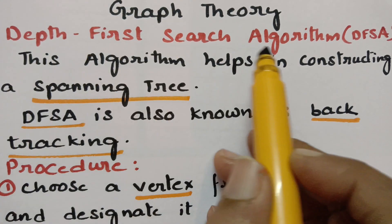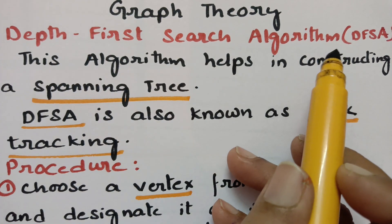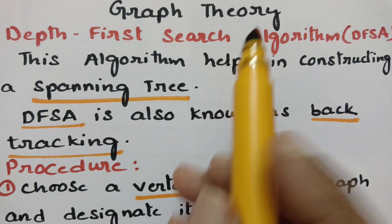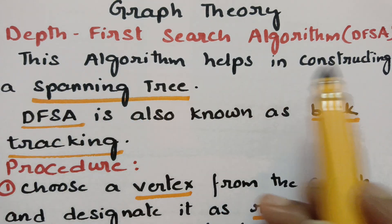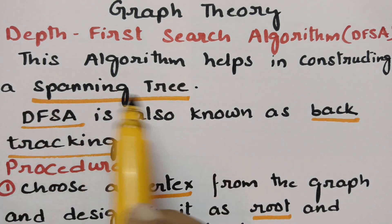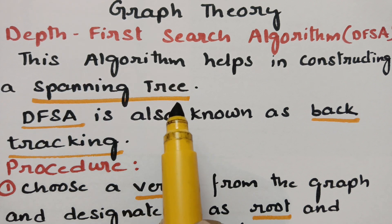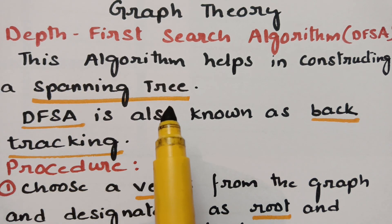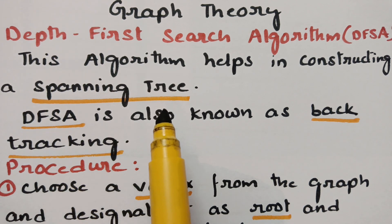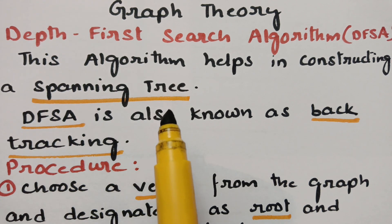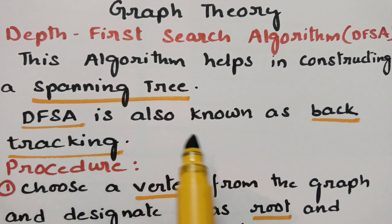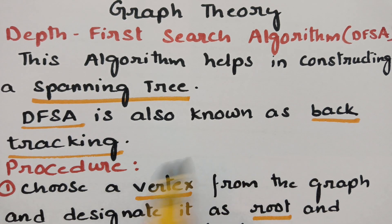Today's video is on depth first search algorithm, a topic from graph theory. This algorithm helps in constructing a spanning tree. There are two algorithms for constructing a spanning tree: breadth first search algorithm and depth first search algorithm. DFSA is also known as backtracking.